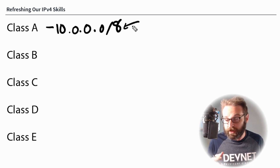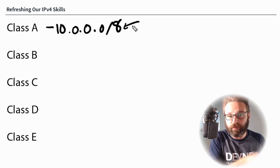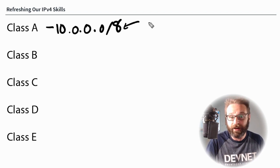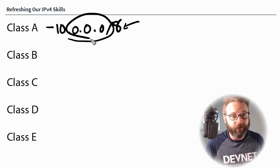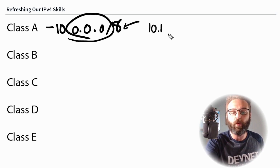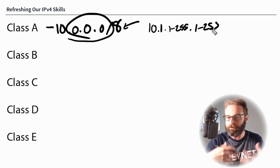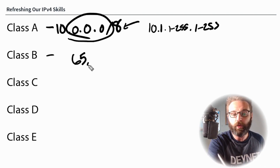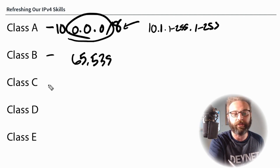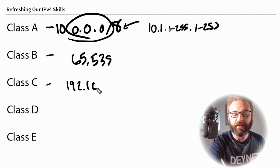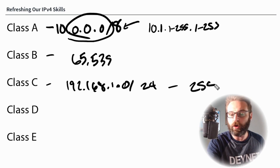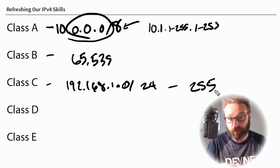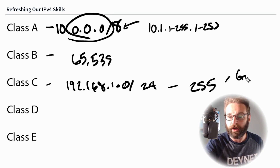We always take this classful boundary of a slash 8 and break it down into smaller usable pieces, because what we're really looking at is millions of addresses. Using all the combinations of addressing, we could do 10.1.1 through 255 and on and on — millions and millions of times. In Class B we get up to 65,535 addresses. When we get to Class C and look at slash 24s, we've whittled it down to 255 addresses. We have to keep in mind we need to reserve one address for the gateway and one for broadcast.